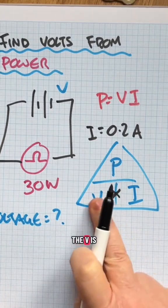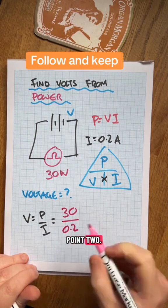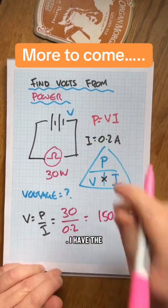I know this formula. P is V times I. If you want the voltage, V is P divided by I. The power is 30 watts, I is 0.2. That gives me 150 volts.